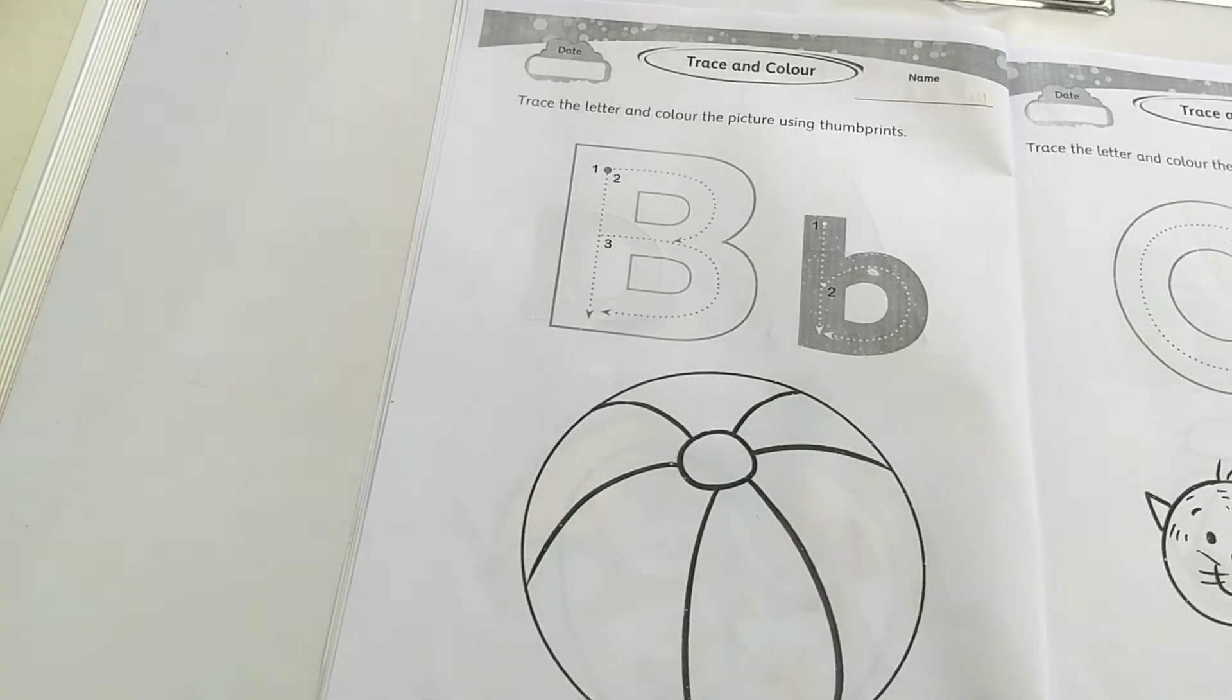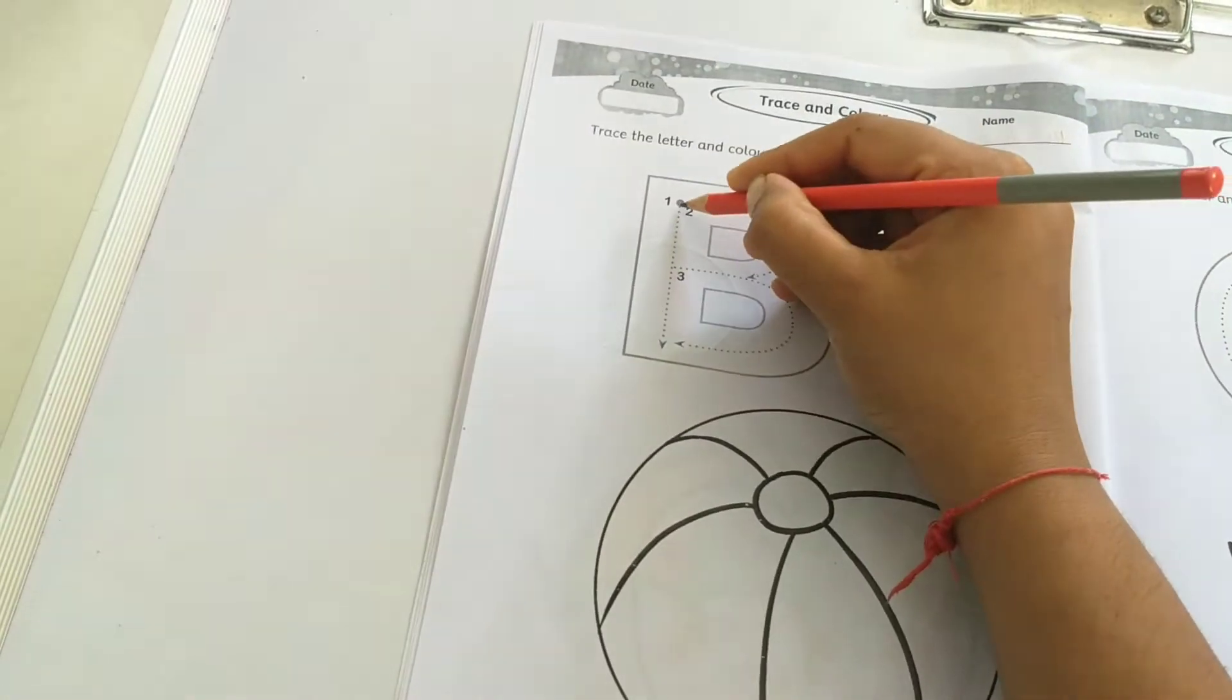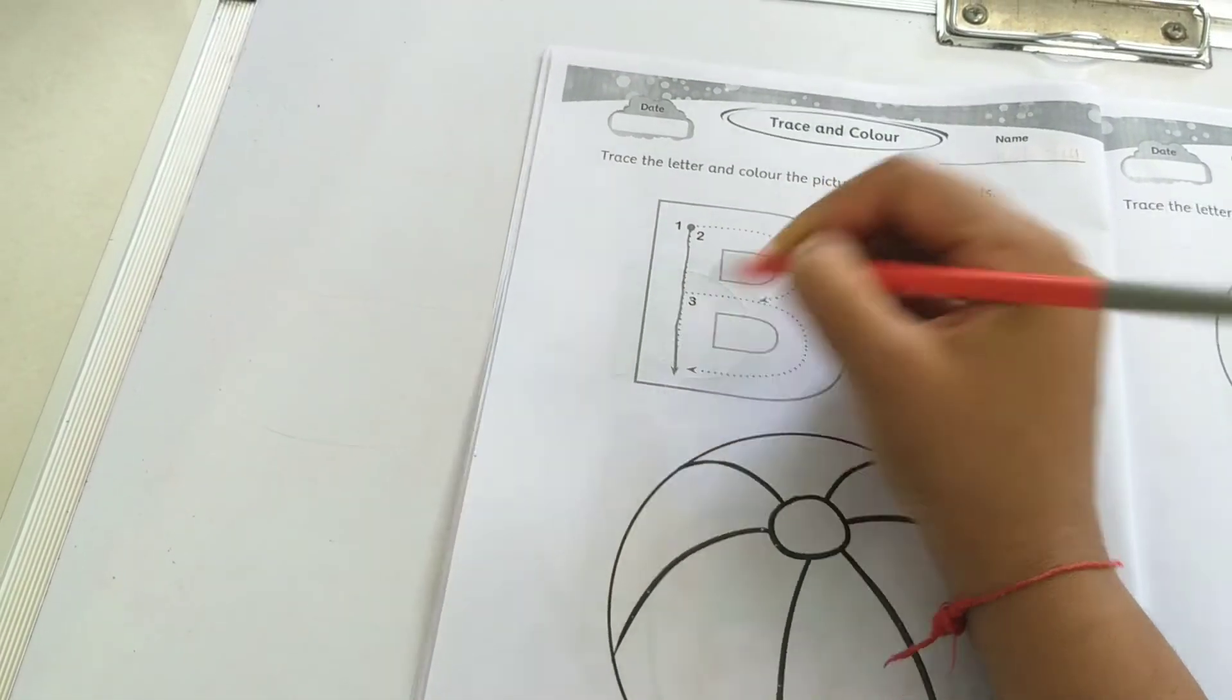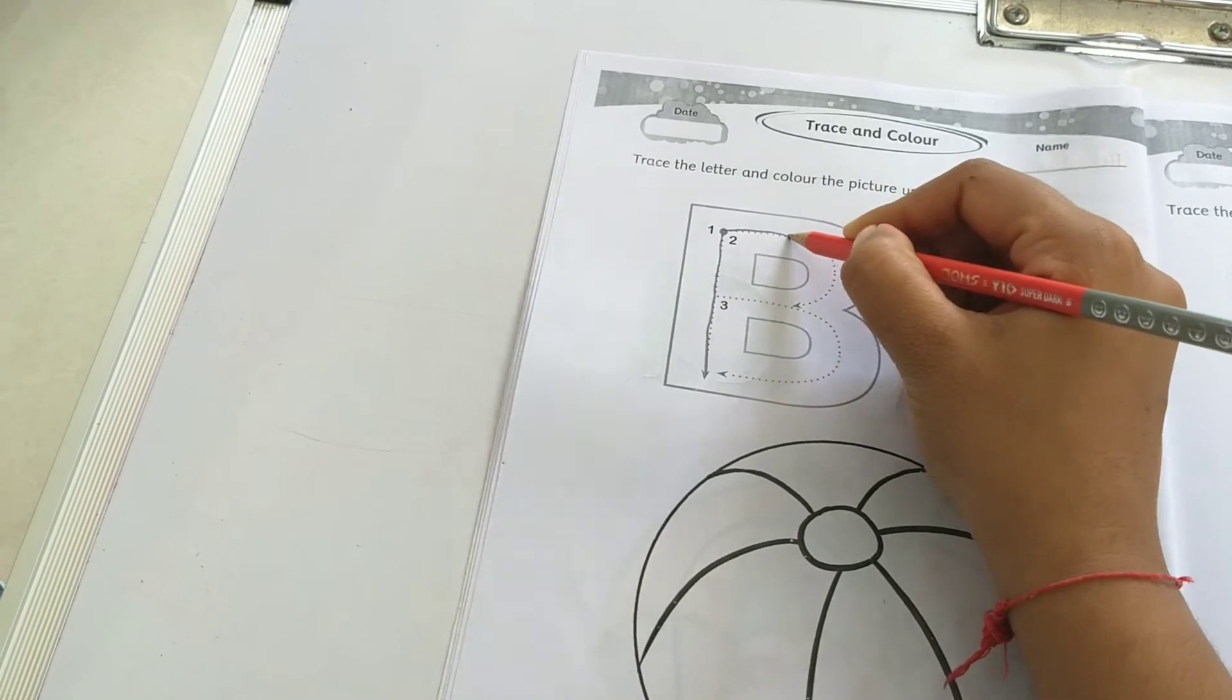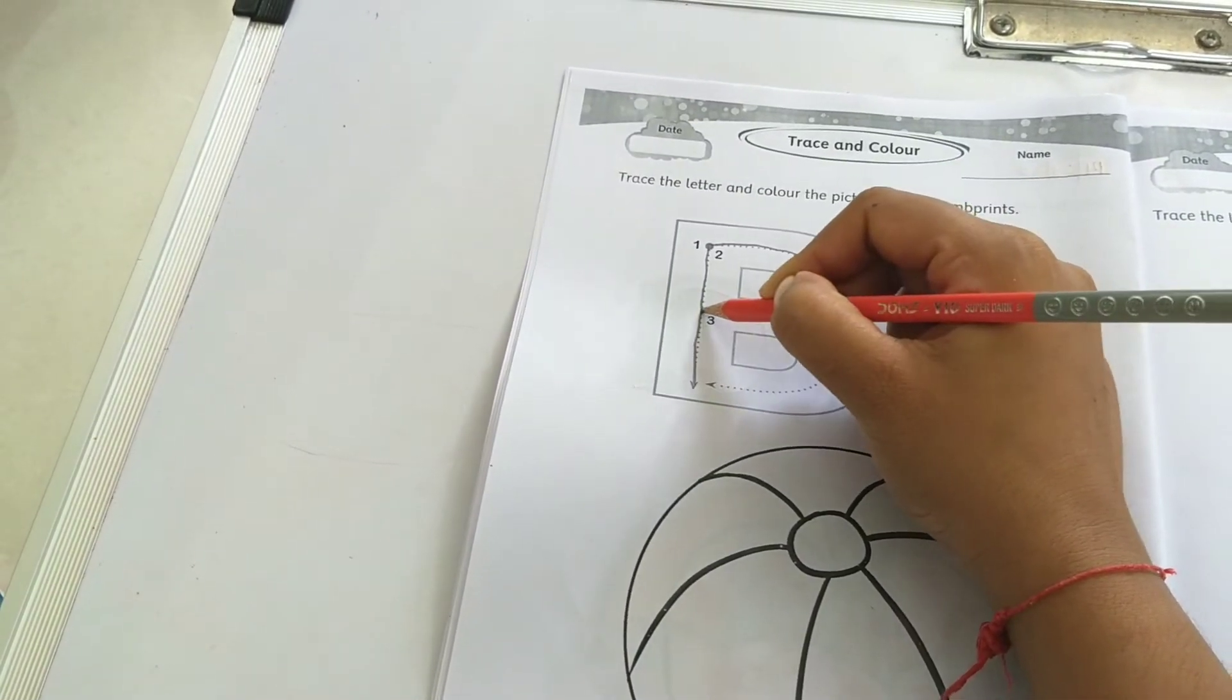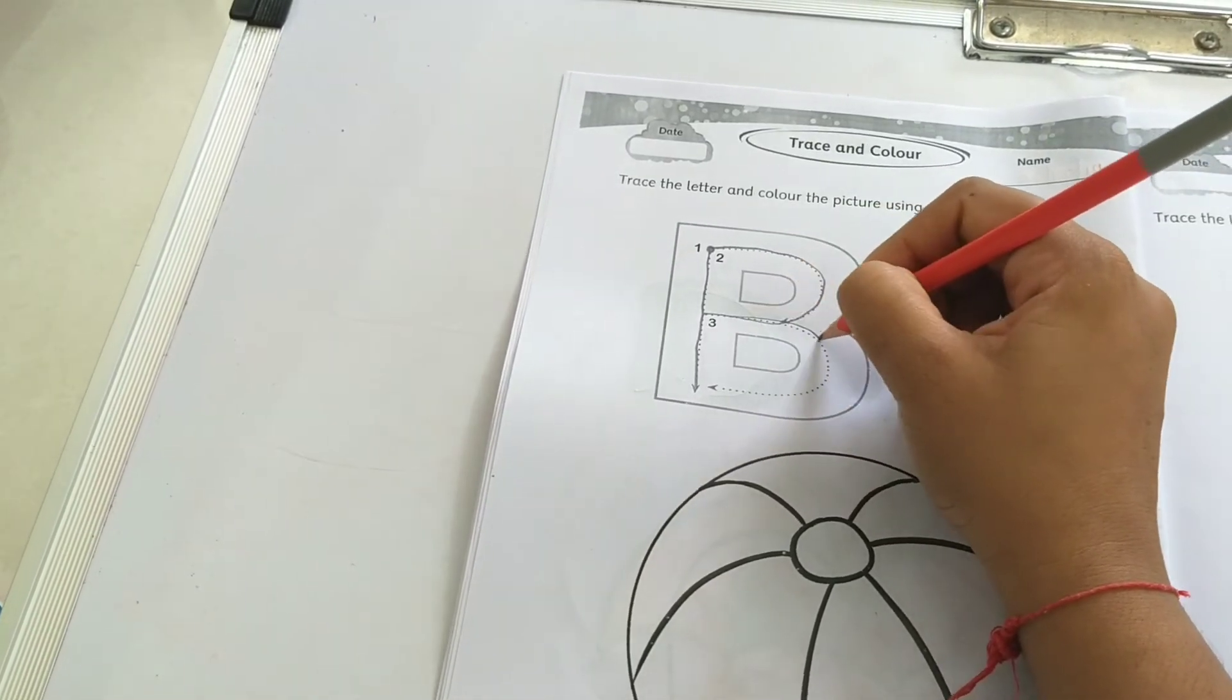Now, page number 5. Trace the letter B. One standing line, one backward curve, another backward curve.